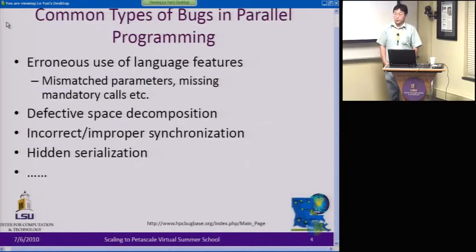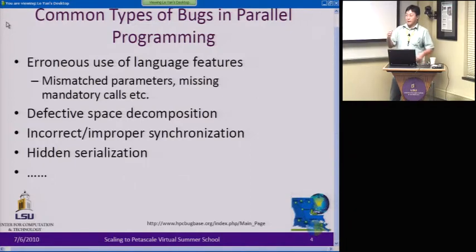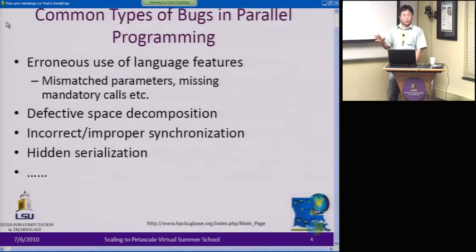There's also hidden serialization. It's possible — and more likely with OpenMP programs — that you have a parallel region that looks parallel, but in reality each thread executes that region in turn. That is a hidden serialization problem. It may not cause your program to crash, but you'll have a load balancing issue or the speedup won't be what you expect.